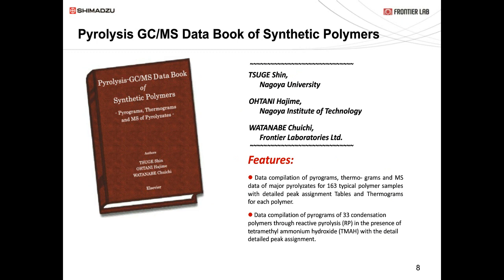To identify the fragments from pyrolysis, we recommend using this book in conjunction with the F-Search and your MS library. This is the Pyrolysis GC-MS Data Book of Synthetic Polymers. It has pyrograms, EGA thermograms, and MS data for major pyrolyzates from many polymers. It also has data for condensate-type polymers where we use reactive pyrolysis.